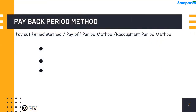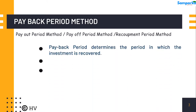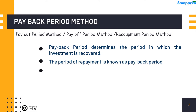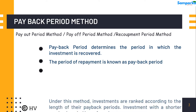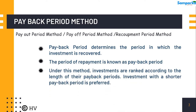Payback period method is also known as payout period method, payoff period method, or recoupment period method. Payback period determines the period in which the investment is recovered. The period of repayment is known as the payback period. Under this method, investments are ranked according to the length of their payback periods. Investment with a shorter payback period is preferred.